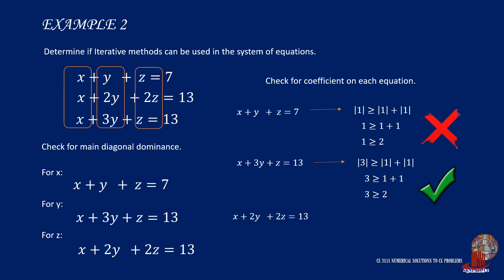Then lastly, the last equation has the check of absolute value of 2 with the absolute values of 1 and 2, resulting to 2 is greater than or equal to 3. Again, this is false. So this system of equations can't be iterated.